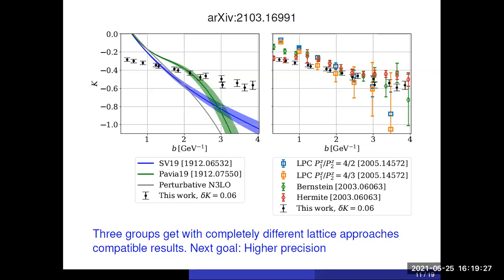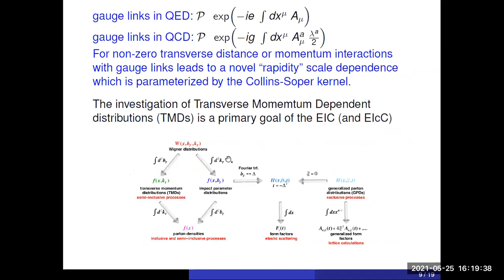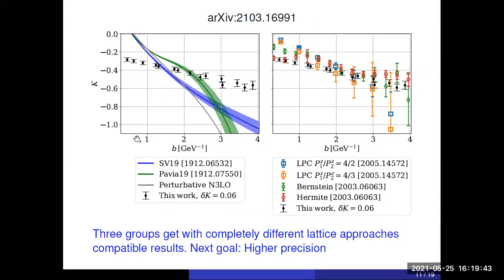I will not say anything about the technical details of the calculation and just show the result. What is plotted here is this Colin-Soper kernel, and it's plotted against the transverse distance, so basically this distance here. And what you see is that you get results all over the place, and these are predictions from phenomenological or perturbative analysis. And one has to know that all of these methods basically break down completely at one in these funny units. And that means these curves here do whatever they want, depending on the parametrization chosen by the physicist who did the analysis.